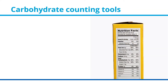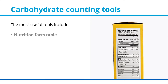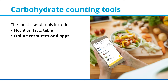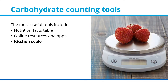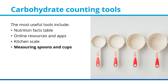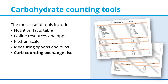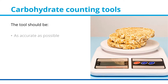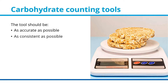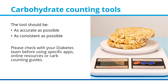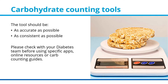Carbohydrate counting tools. The most useful tools for counting carbohydrates include the Nutrition Facts table on food packaging, online resources and apps, a kitchen scale, measuring spoons and cups, and the carb counting exchange list, which lists the carbohydrate and serving amounts for many popular foods. These tools should be as accurate and consistent as possible. Please check with your diabetes team before using specific apps, online resources, or carb counting guides.